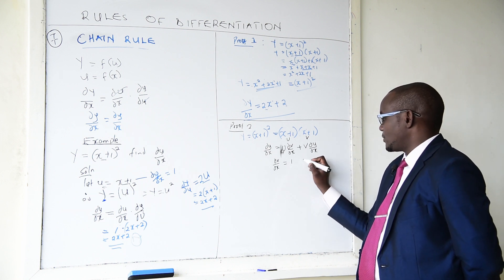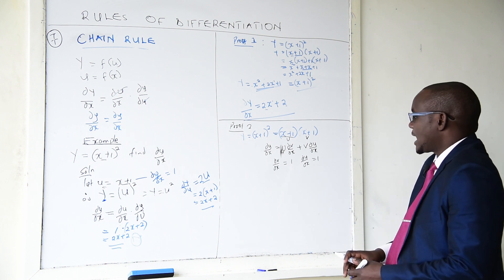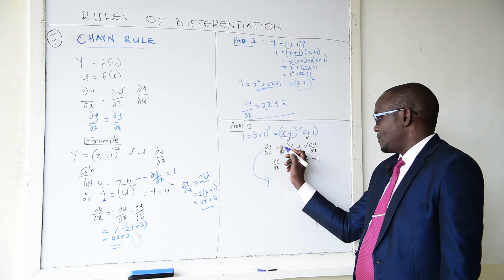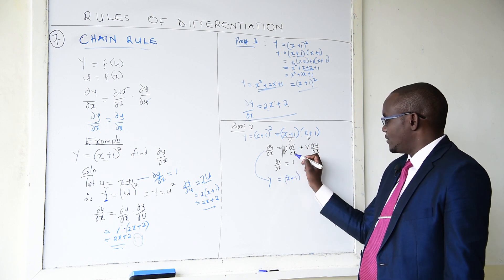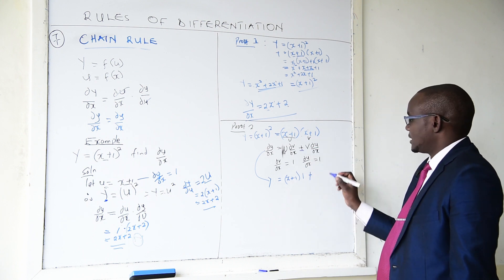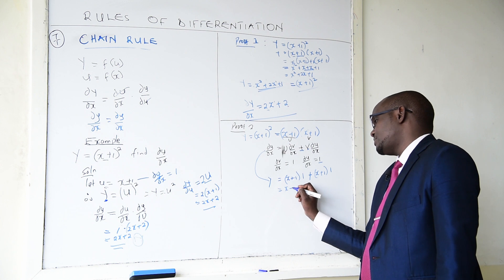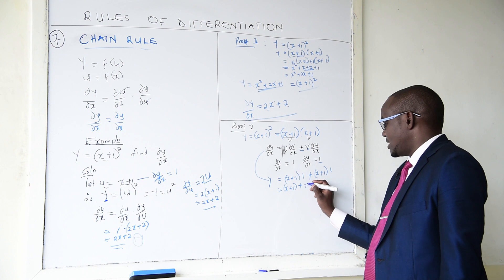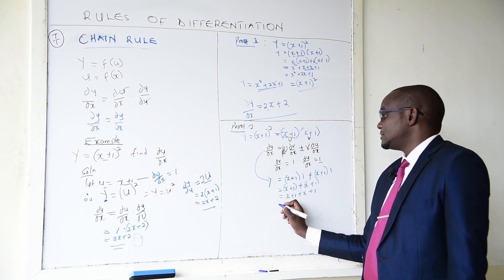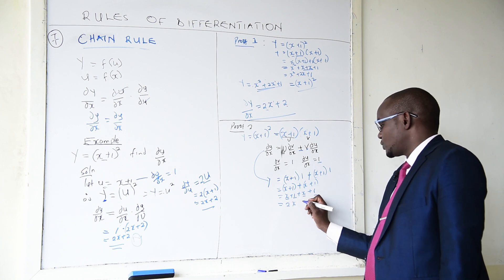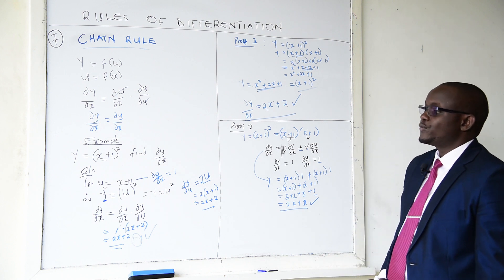Applying the product rule: u times dv/dx is (x+1) times 1, and v times du/dx is (x+1) times 1. Adding these: (x+1) plus (x+1) equals 2x plus 2. This is the same answer, proving our chain rule formula is correct.